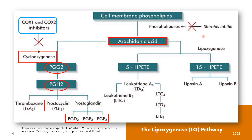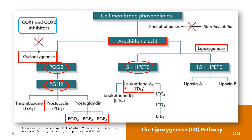Let's now proceed to the lipoxygenase pathway, or the LO pathway. This pathway leads to the formation of monoxygenated compounds such as the hydroperoxytetraenoic acids, or HPETEs, and metabolites known as lipoxins, via three principal enzymes: 5-lipoxygenase, 12-lipoxygenase, and 15-lipoxygenase. The 5-HPETEs are considered to be substrates for leukotriene synthesis, leading to the formation of key inflammatory mediators — the leukotrienes — including the unstable intermediate leukotriene A4, or LTA4.